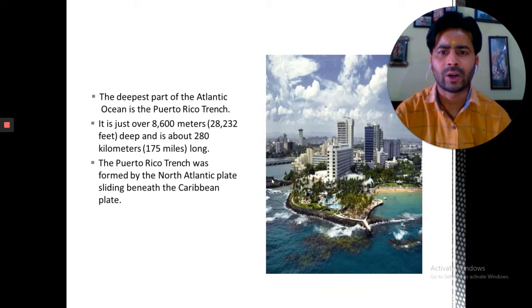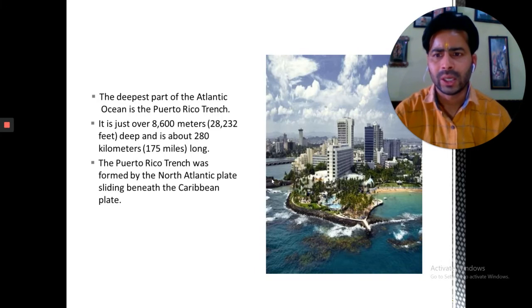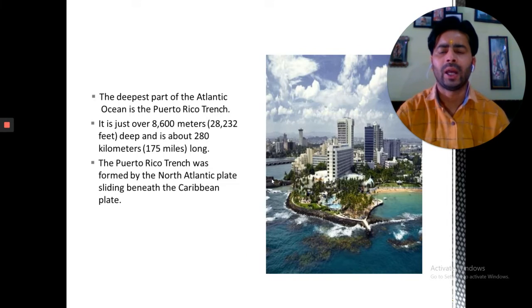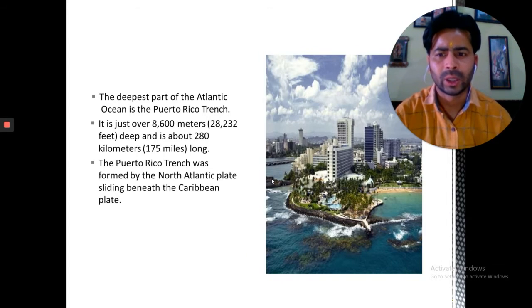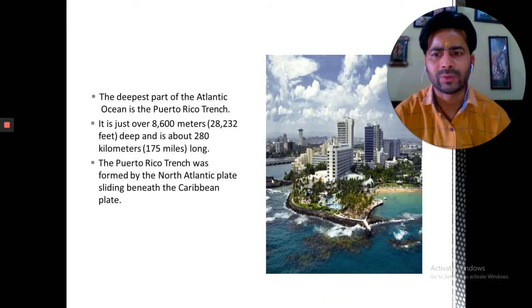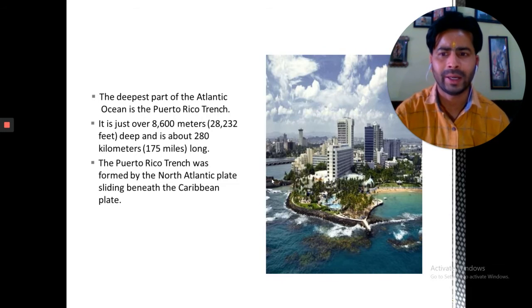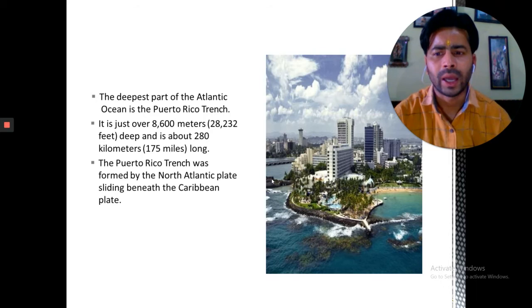The deepest part of the Atlantic Ocean is the Puerto Rico Trench. It is just above 8,600 meters deep and above 280 kilometers wide. The Puerto Rico Trench was formed by the North Atlantic plate sliding beneath the Caribbean plate.